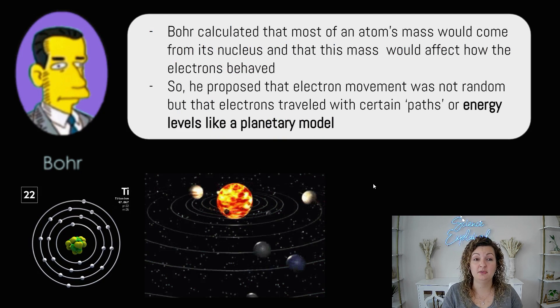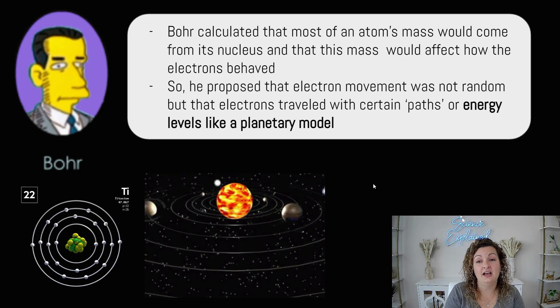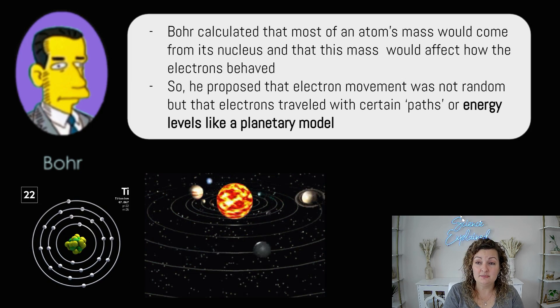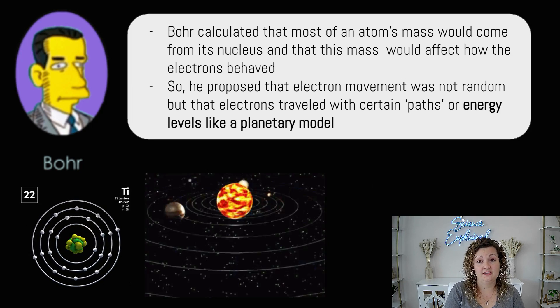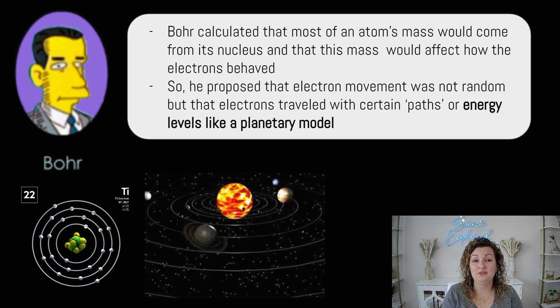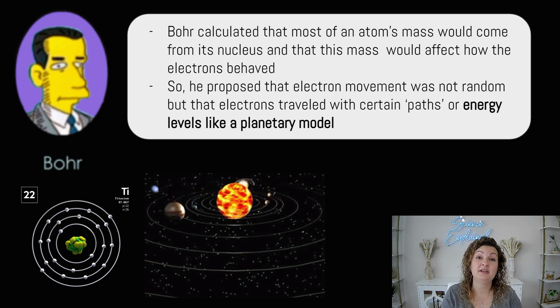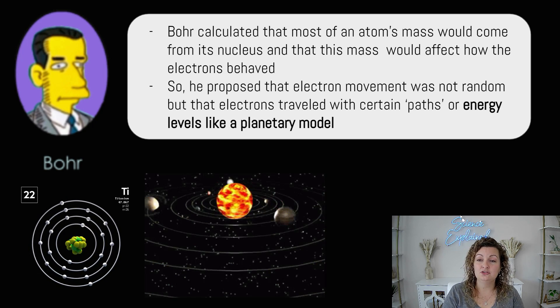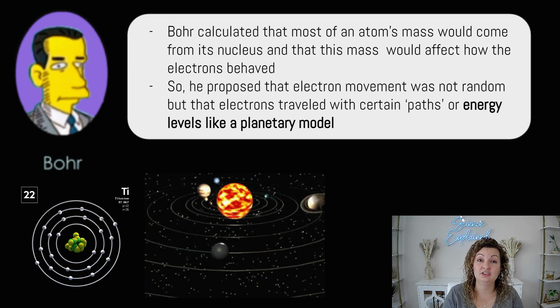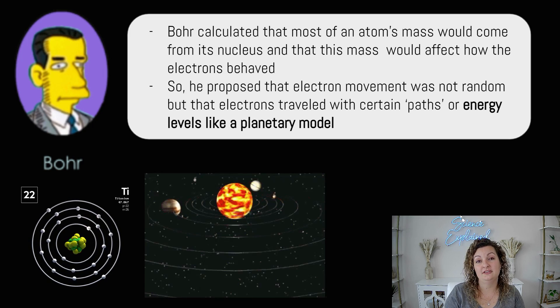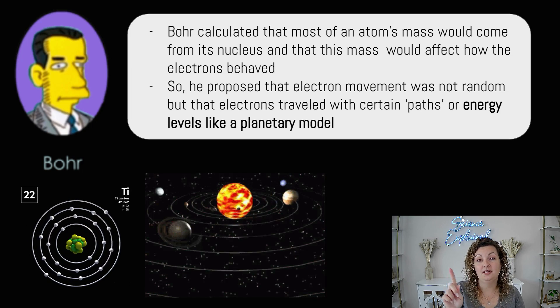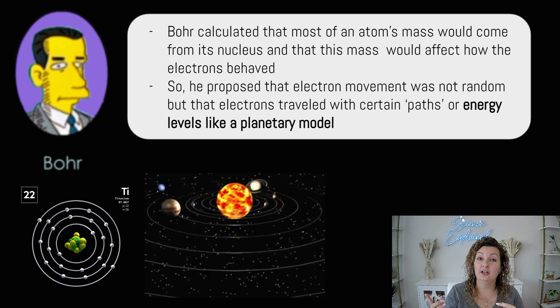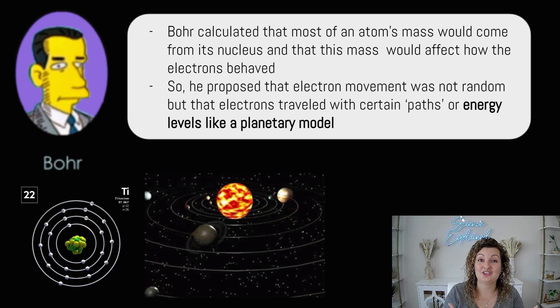So then we have Bohr. Bohr came along a little bit later and he actually calculated that most of the mass of the atom would be in its nucleus and that this mass would affect the electrons behavior. So he proposed that the electron movement was not random, but that electrons traveled in paths or energy levels like planetary models. So like a planet would orbit the sun, electrons would orbit the nucleus just like that.